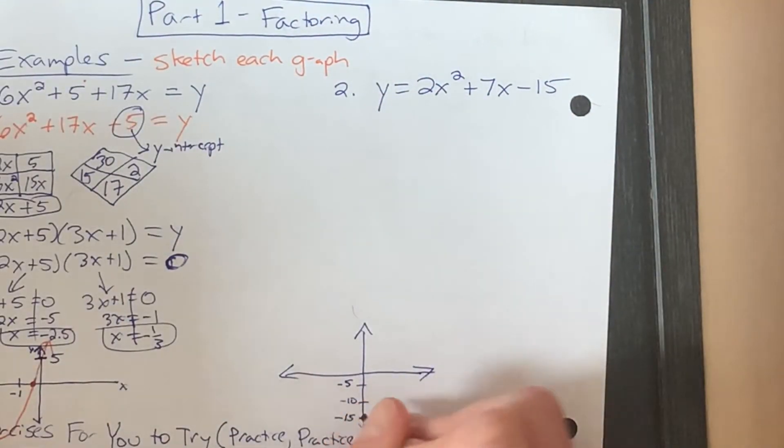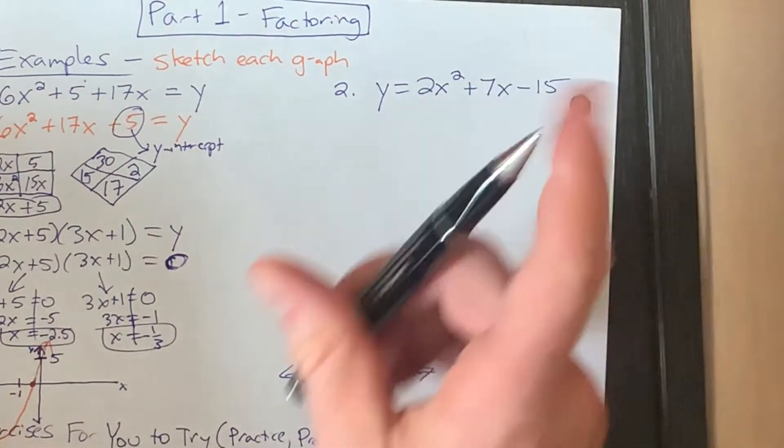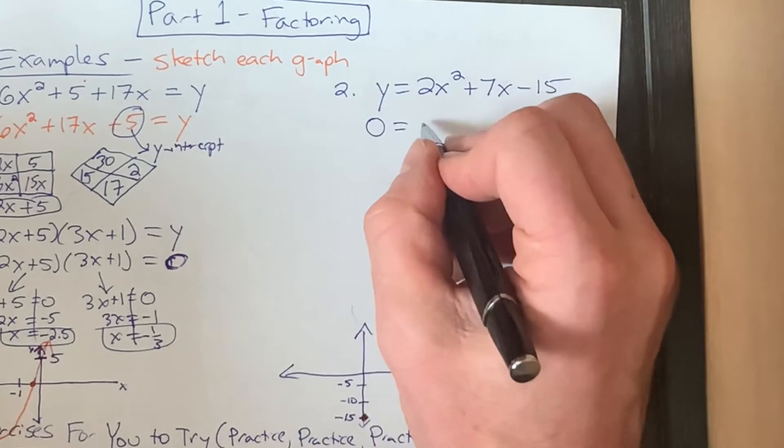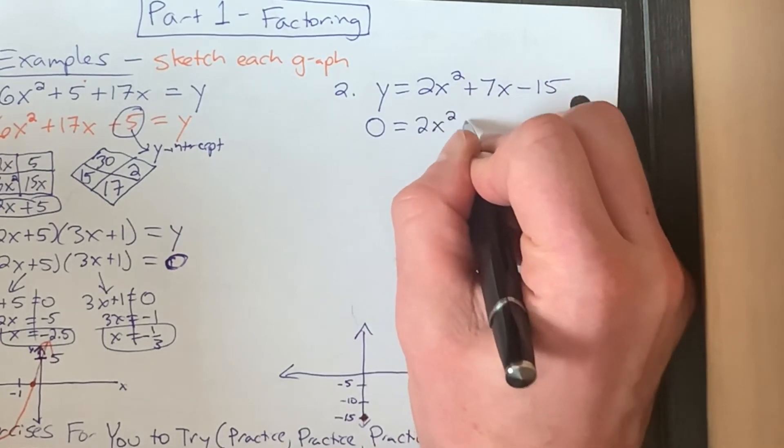Let's get the roots. Let's get the zeros. Let's get the x-intercepts. They're how many different things? They are the same thing. So first of all, to get our roots, that's the value of x when y equals zero. So I'll change to that first.